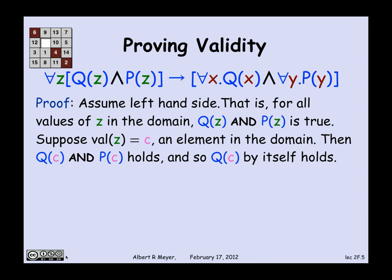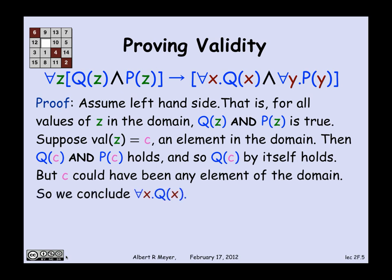Now we're in an interesting situation, because we just proved that Q of c holds. And we know nothing and have assumed nothing about c, except that it's an element in the domain. c could have been any element in the domain. And we've managed to prove that Q of c holds. So it follows that we have really proved that for every x, Q of x holds.